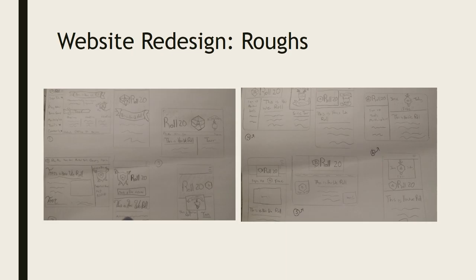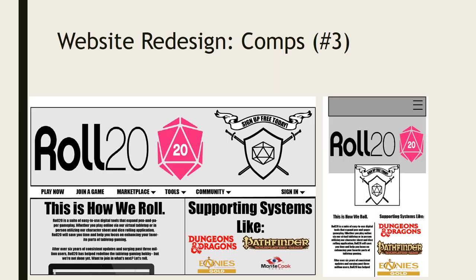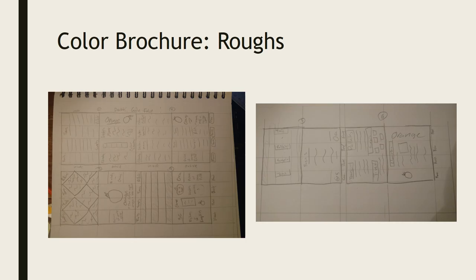Moving on to the website redesign module — you can see my roughs here. In the comps I developed them further, once again keeping symmetry and simplicity paramount. In number three it got a little more simplistic, and number five was probably my simplest one, but I ended up loving it so much that it became my final design. It gives the reader a very even-keel sense, almost like each individual element is in its own separate box.